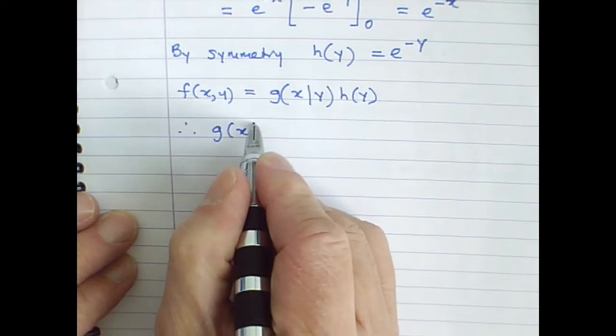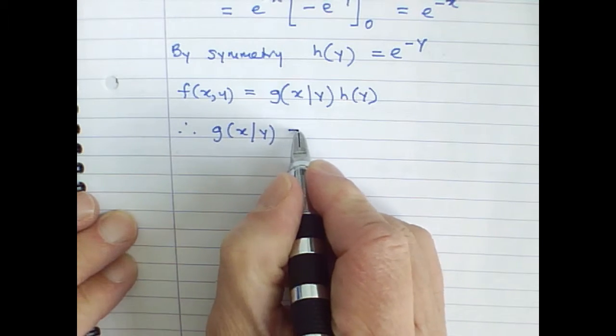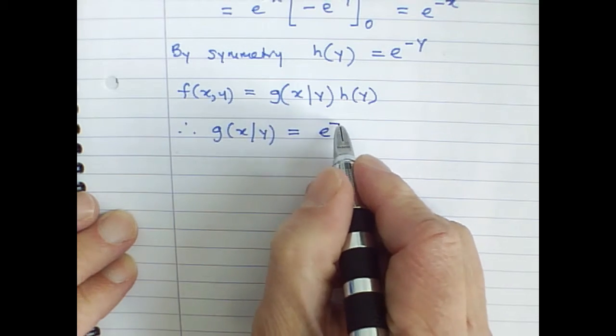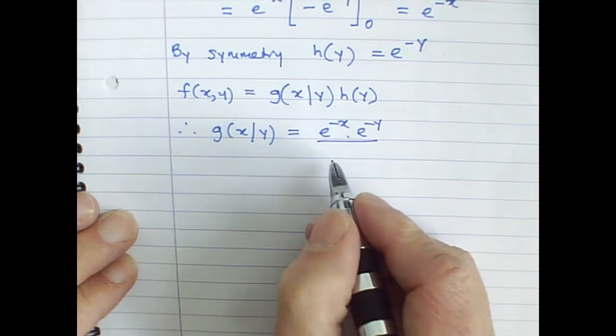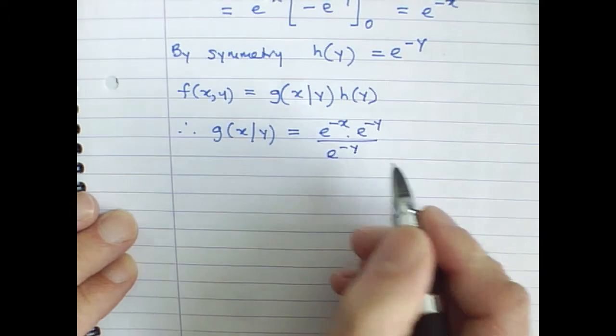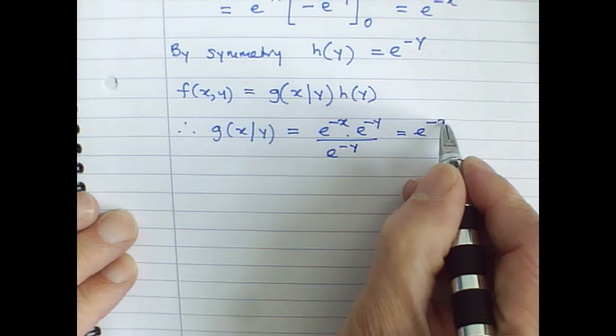Therefore, g(x|y) can be written as e^(-x) multiplied by e^(-y) divided by e^(-y). In other words, e^(-x).